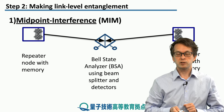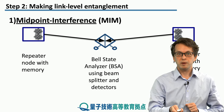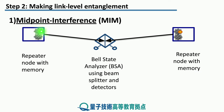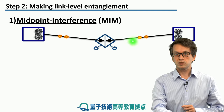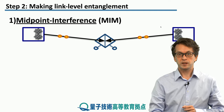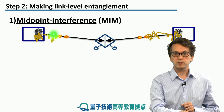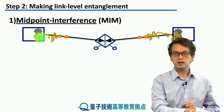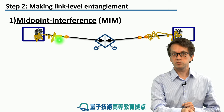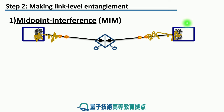So how can the network nodes establish entangled pairs between each other? These atoms can be made to generate and emit a photon — the photon is represented by the yellow circle. If we have two qubits or two quantum memories, both of them can be made to generate and emit photons. These photons are then collected into fibers that lead to the BSA in the middle. Furthermore, these photons can be emitted in such a way that they are entangled with their quantum memories — the entanglement is represented by the squiggly line. So the bottom memory is entangled with the second photon, and the top memory is entangled with the first photon, and similarly on the right side with the other neighboring network node.